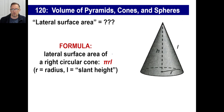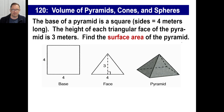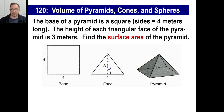The slant height goes from the base edge up to the tip. Now here's an example: the base of a pyramid is a square with sides 4 meters long, and the height of each triangular face is 3 meters. Find the surface area. We have four triangular faces, each with area: 4 times 3 is 12, divided by 2 is 6. Four faces times 6 is 24. The square base is 4 by 4, which is 16. Total surface area: 24 plus 16 equals 40 square meters.